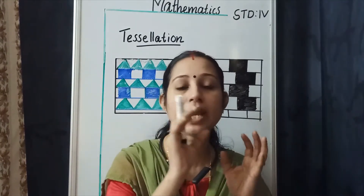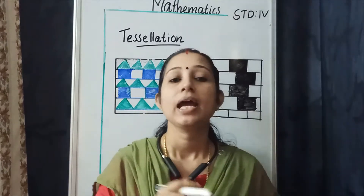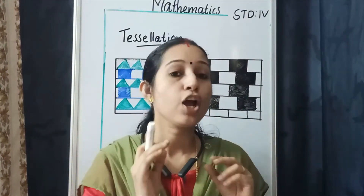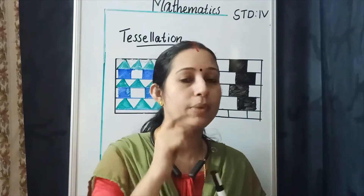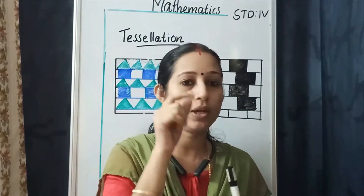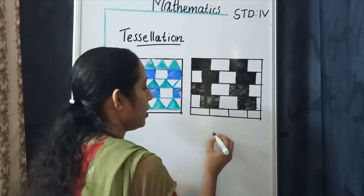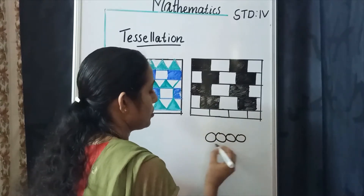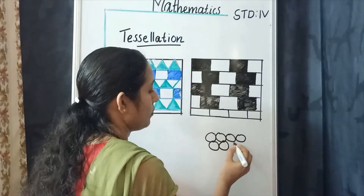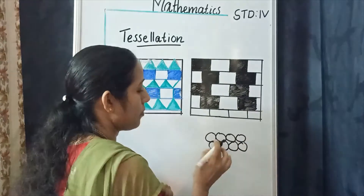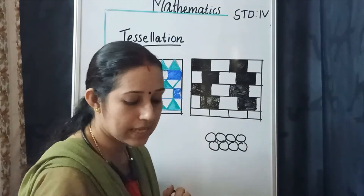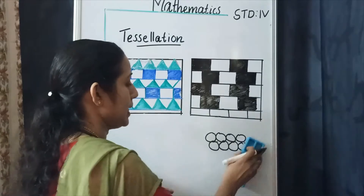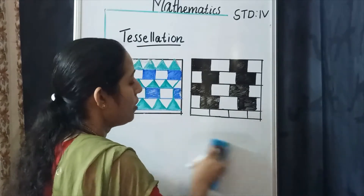But circle, oval, and similar shapes are non-tessellating shapes. If you try to join circles together, there will be gaps. So circle and oval are non-tessellating shapes.